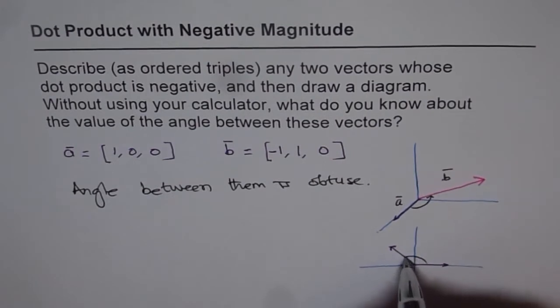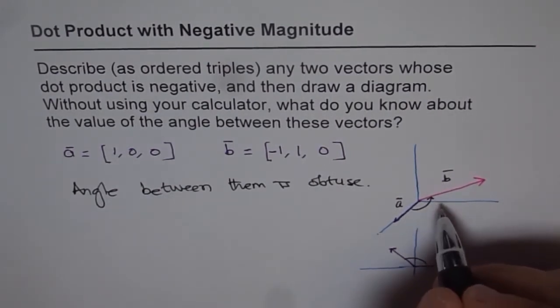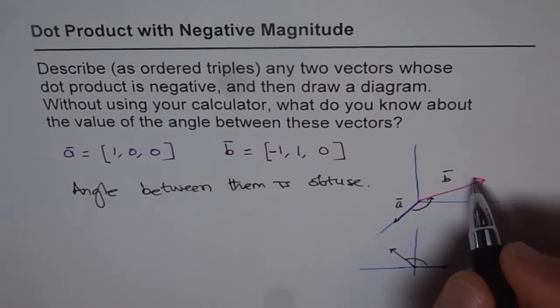Angle, as you can see, it has to be obtuse. So it is more than 90 degrees. Only then you get a dot product which is negative.